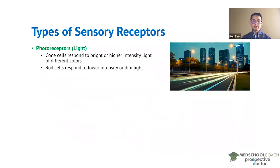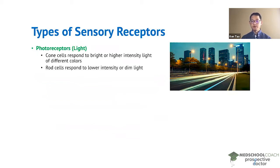Next, we have photoreceptors that are for detecting light. Within the retina of our eyes, we have two different types of photoreceptors. We have cone cells that are for responding to bright light of different colors, so cone cells are responsible for color detection.